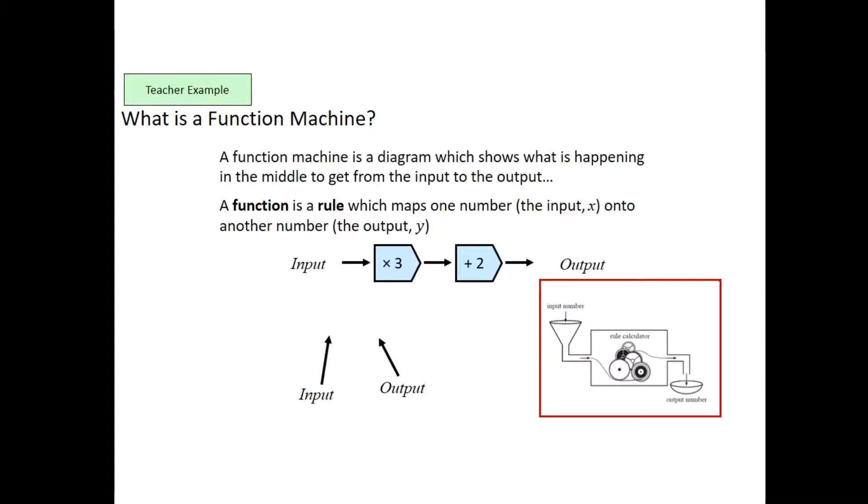So for example, if I put a number into this function here, multiply by 3 and then add 2, I'll get an output. So for instance, if I put 2 into this, first I'll times it by 3 which will give me 6, and then I'll add 2 which will give me an output of 8. So input would be 2, output would be 8 for this example.